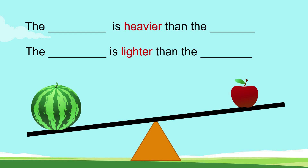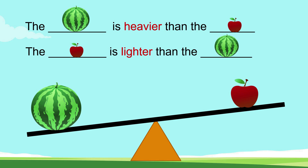Look at this picture and answer. The watermelon is heavier than the apple. Yes, you are right — the watermelon is heavier than the apple, and the apple is lighter than the watermelon.